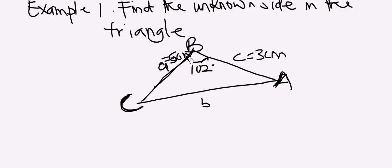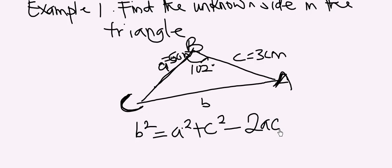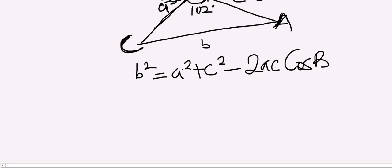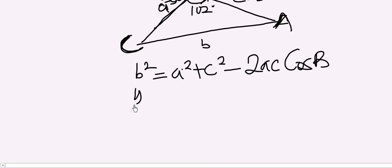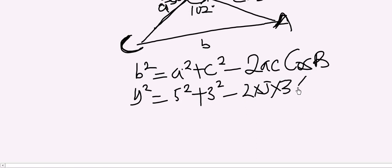All we have to do is apply the cosine rule that is convenient with this. We have B squared equal to A squared plus C squared minus 2AC cos B. That formula is convenient with the unknown side here.